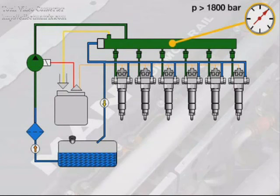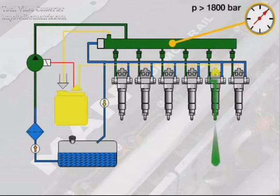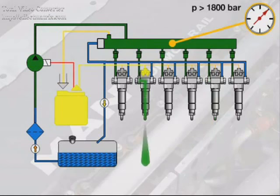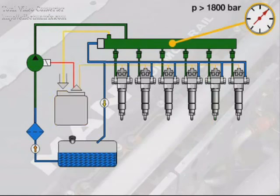The start of injection and injection time are set by the EDC control unit by means of electrically actuated solenoid valves. The common rail system provides high injection pressure even at low engine speeds and regardless of engine load.